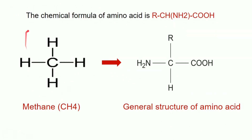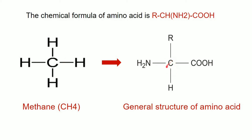Methane is a type of gas. Carbon is made up of carbon and hydrogen — C is 1 and H4. CH4 means methane. Methane formula is C and 4H. Amino acids are like this. H2N is the amino group. COOH is the carboxyl group. In general, all amino acids are the same.